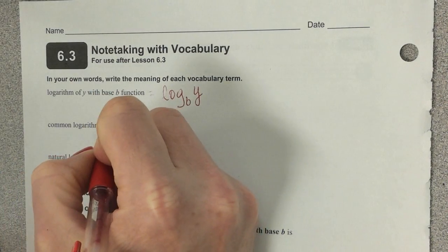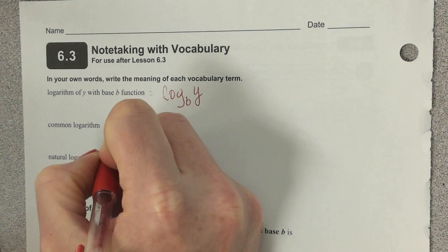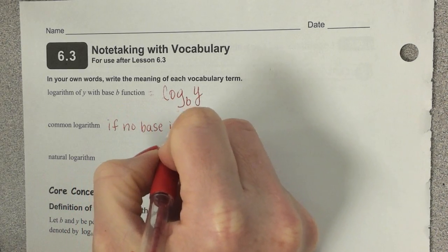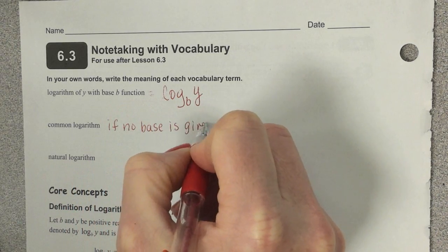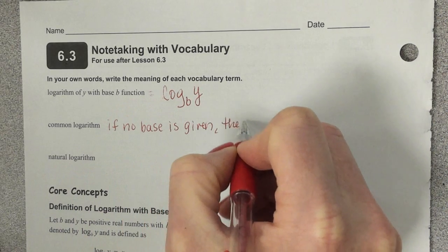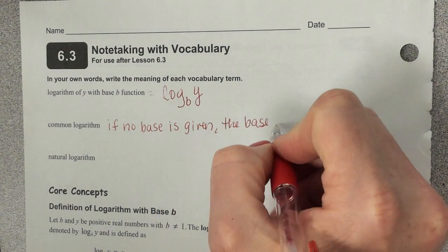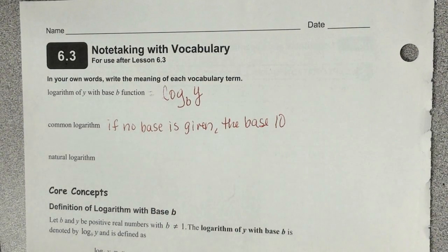Common logarithm. If no base is given, the base is, what would you think? What base is our number system in? How many fingers do you have? 10. We use a base 10. So the base is going to be 10. If there's no base given, it's base 10. The way we count is base 10. Once we get to 10, we start over with our numbers again.